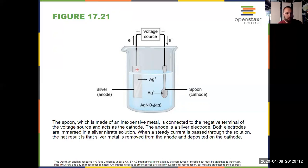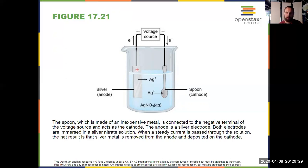That wraps up section 17.7. Just know the conceptual ideas: electrolysis is non-spontaneous, we have to put in energy greater than the cell potential to get it to occur. Know the conceptual ideas about batteries and corrosion, and that wraps up Chapter 17.